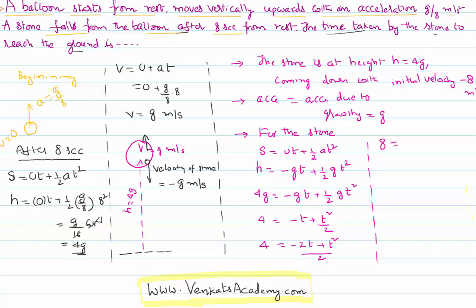8 = t² - 2t, or t² - 2t - 8 = 0. I can write -2t as -4t + 2t, so t² - 4t + 2t - 8 = 0.